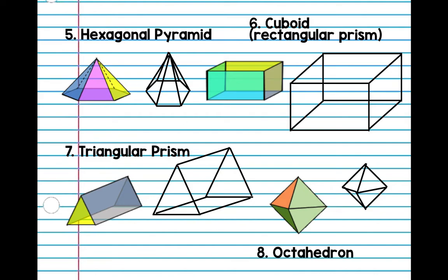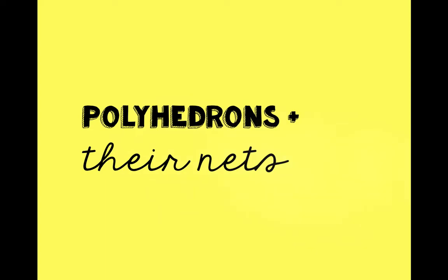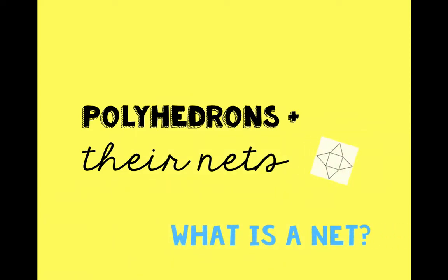So those are our eight polyhedrons that we're going to be working with for this chapter. Now for part two, we're going to be looking at their nets. So what is a net? A net is just a 2D shape — it's flat — and when you fold it, it creates a 3D shape. I'm going to show some nets on the screen and you're going to say it out loud, just to see if you can do it.